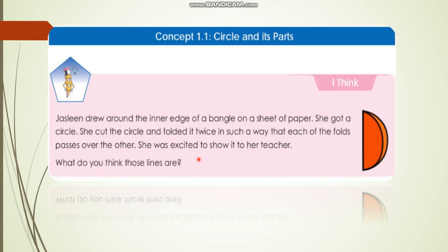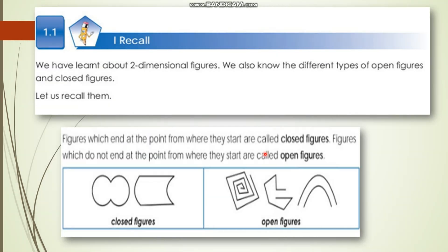No problem if you don't know. In this chapter, we are studying more about these parts of the circle. Before moving to the parts of the circle, we will recall some topics which we learnt in previous years. We have learnt about two-dimensional figures and different types of open figures and closed figures. Let us recall them.